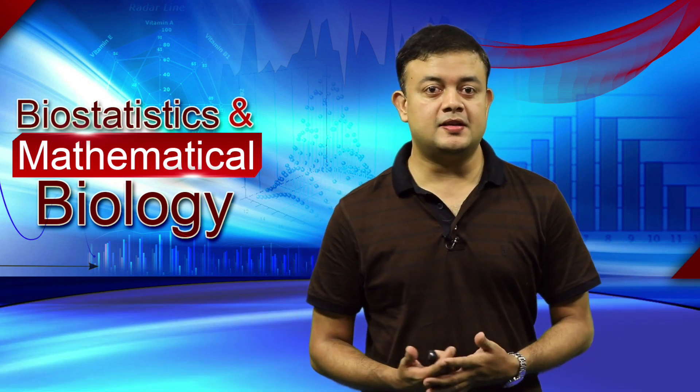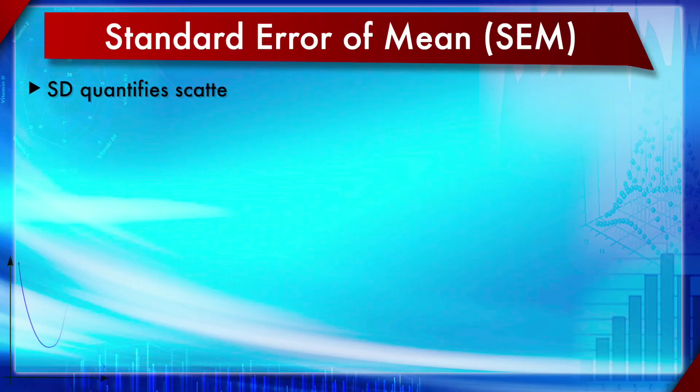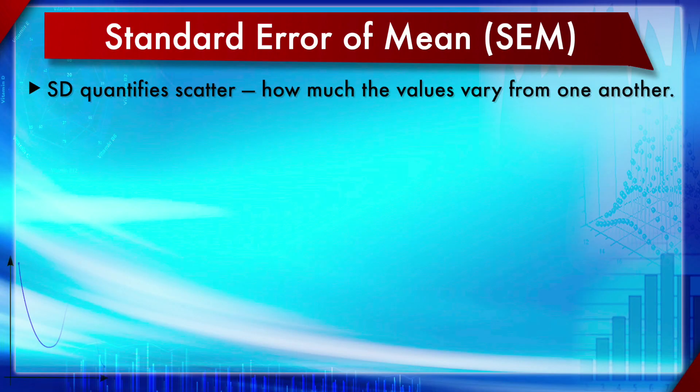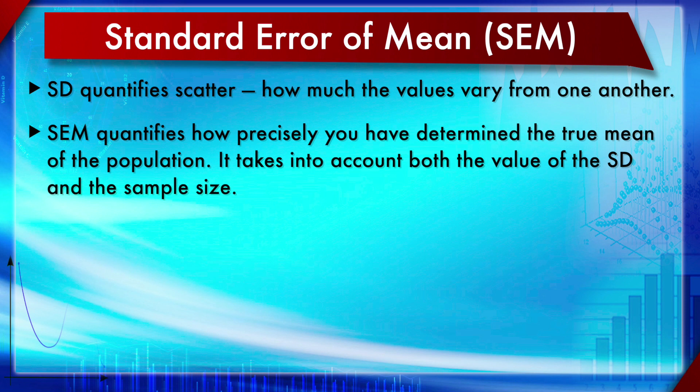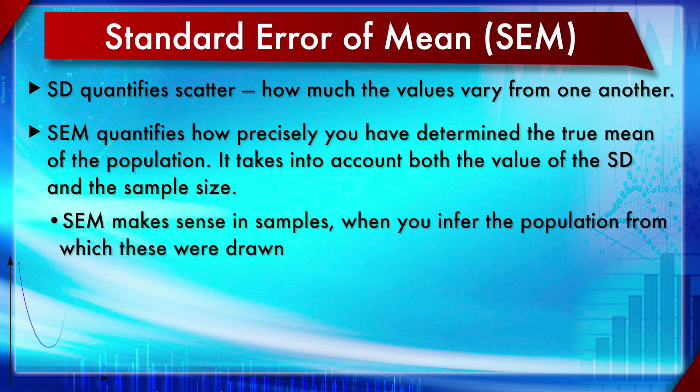Module 8, Measures of Dispersion or Interval Estimates, Section 3: SEM, CV, and CD. First is SEM — Standard Error of the Mean. As we have already seen, standard deviation quantifies the scatter or variability of measurements in a data set, but in the case of SEM, it doesn't portray this variability at all.